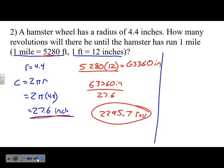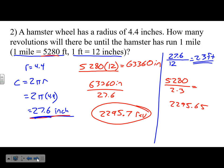Another method: convert the circumference from inches to feet. 27.6 divided by 12 = 2.3 feet per revolution. Then divide one mile in feet: 5,280 divided by 2.3 = 2,295.65 — exactly the same answer. If you're unsure whether to multiply or divide, remember whether your number should get bigger or smaller.